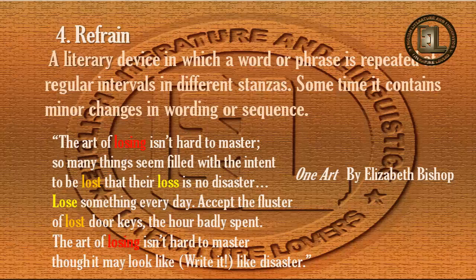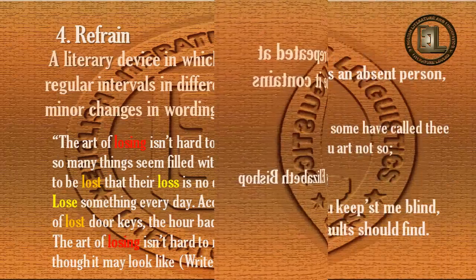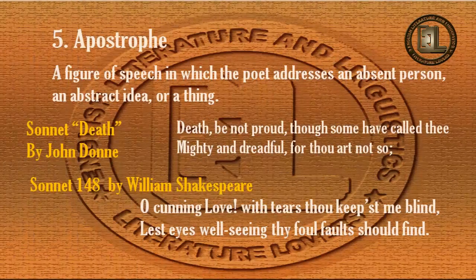The fifth term is apostrophe. What is apostrophe? It is a figure of speech in which the poet addresses an absent person, an abstract idea, a god or goddess, or a thing. As an example, I have put two lines here — the first from a sonnet by John Donne.